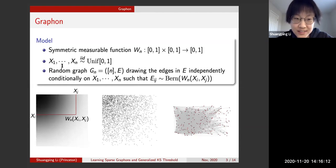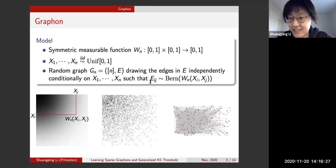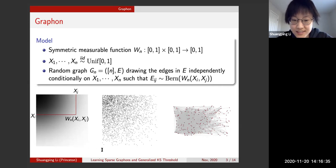To generate a random graph, you sample n labels x_1 to x_n i.i.d. uniform on [0,1]. The random graph has n vertices, and each edge e_{ij} connecting vertex i to vertex j is drawn from a Bernoulli distribution with parameter w(x_i, x_j).